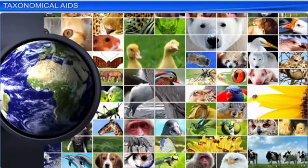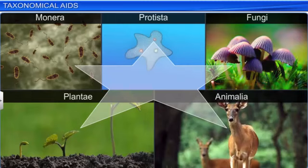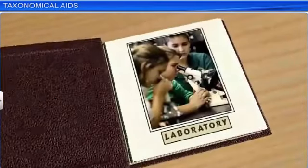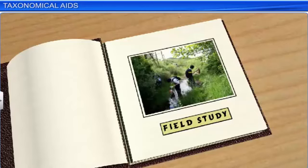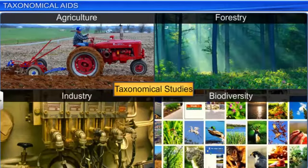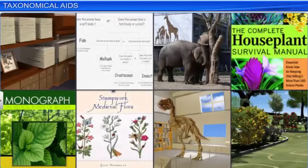Our planet is filled with numerous living organisms. To simplify the study of these organisms, they are classified into convenient categories based on their characteristics. This classification process is known as Taxonomy. Taxonomic studies require careful identification of the organisms, for which intensive laboratory and field studies are carried out, and actual specimens of plant and animal species are collected. These studies help in disciplines such as agriculture, forestry, industry, and in knowing the biodiversity.